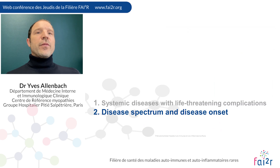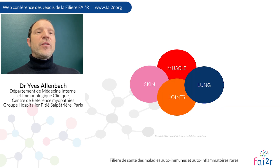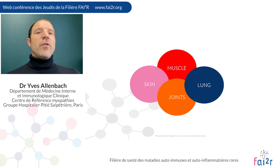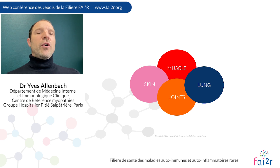What is the spectrum of disease at onset? There are four main domains for both conditions: muscle, lung, joint, and skin. Some patients have phenotypes mainly involving the skin, the joint, the lung, and sometimes the muscles. All these patients can present to dermatologists, rheumatologists, pneumologists, or internal medicine specialists.